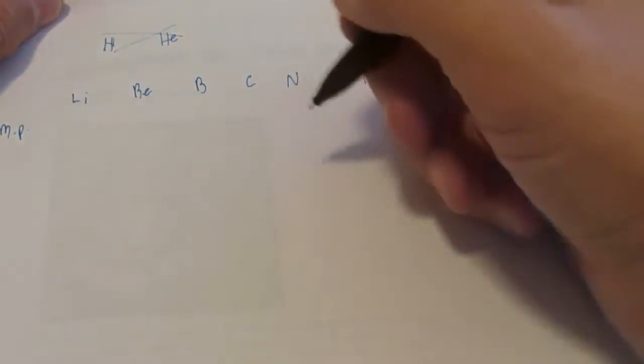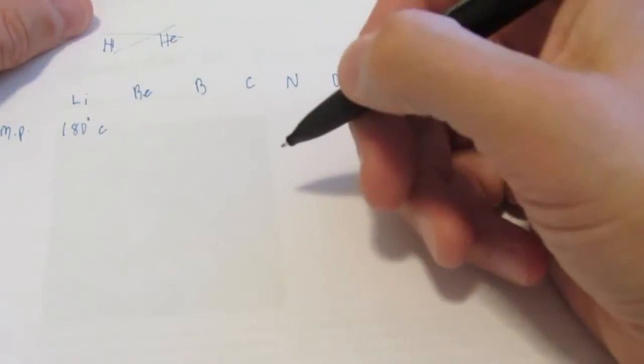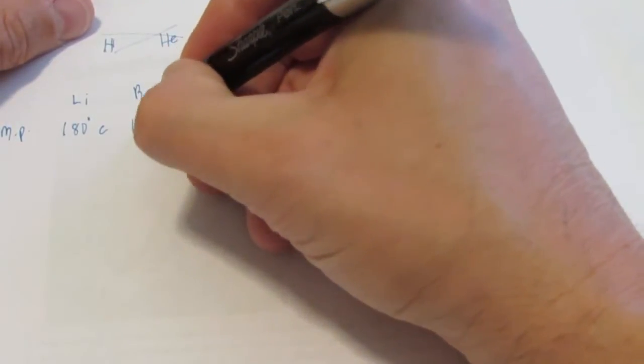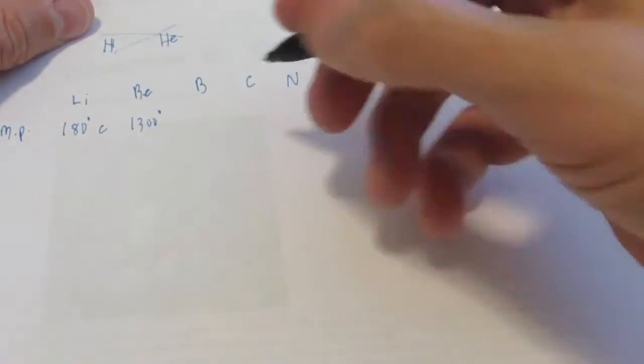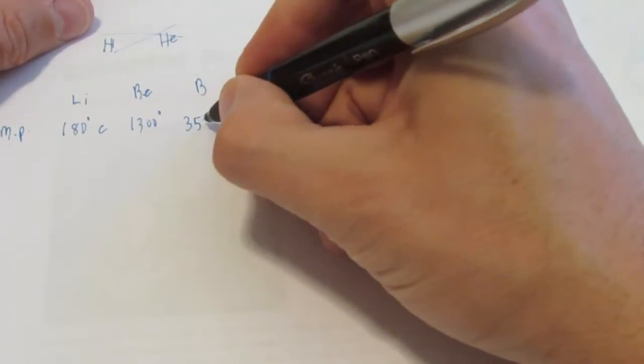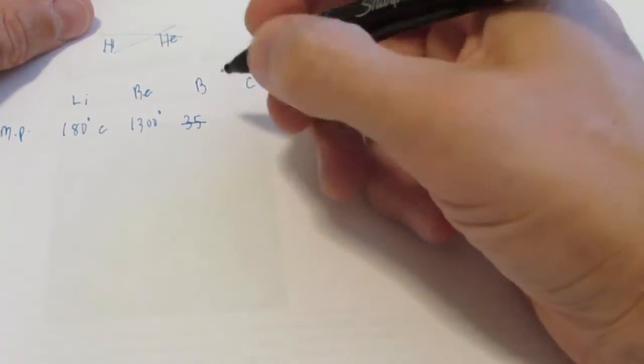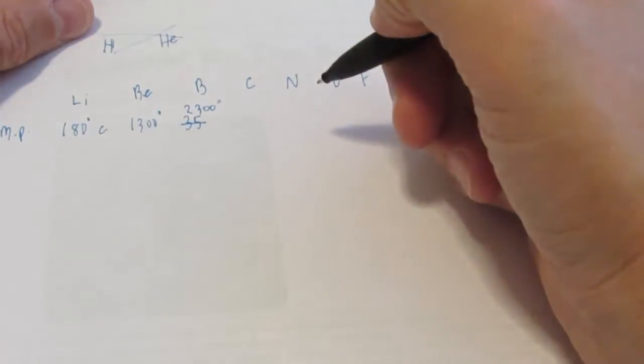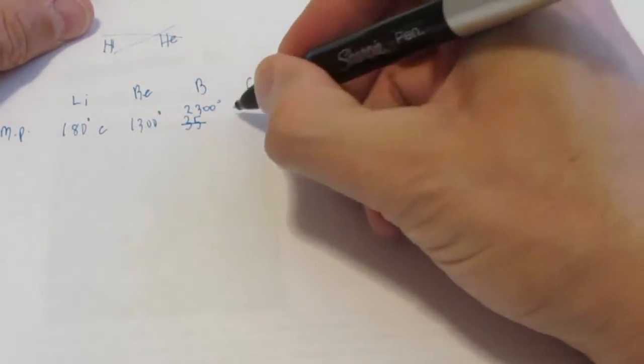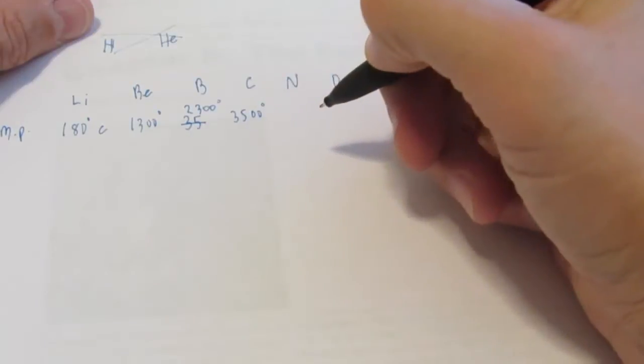Let's discuss the melting points of these elements. If I looked up the melting point of lithium, it turns out to be about 180 degrees Celsius. Beryllium is close to 1300 degrees Celsius. Boron has a melting point of 2300 degrees Celsius. Now we can do carbon, 3500 degrees Celsius.